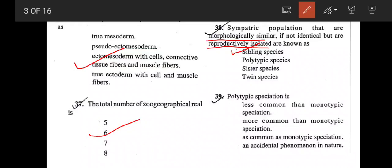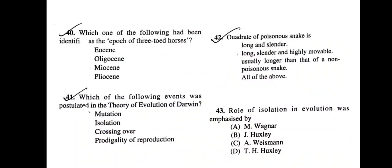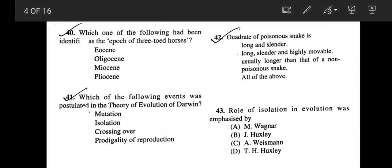Next question: Polytypic speciation is less common than monotypic, more common than monotypic, as common as monotypic, or accidental phenomenon? Polytypic speciation is more common than monotypic speciation.